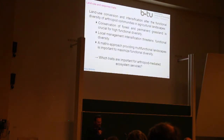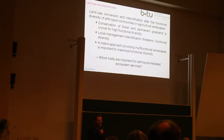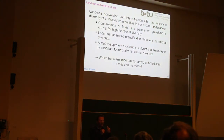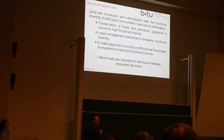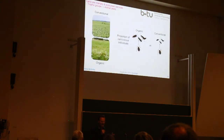To summarize the response traits section: land use conversion between different land use types will have dramatic consequences for trait composition. Local management has additional potential but the direction is not very predictable so far — apart from the fact that higher intensity usually selects for smaller individuals and smaller species. For many other traits we don't yet know what the responses are. Which traits are then important for arthropod-mediated ecosystem services?